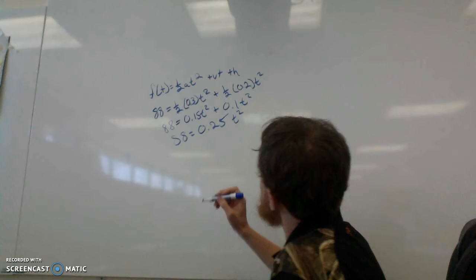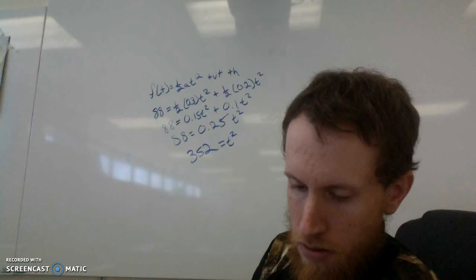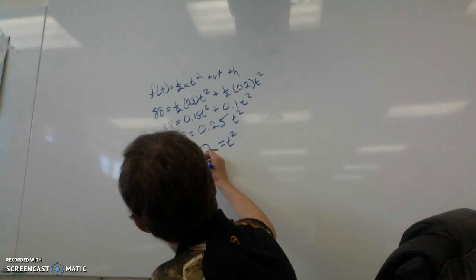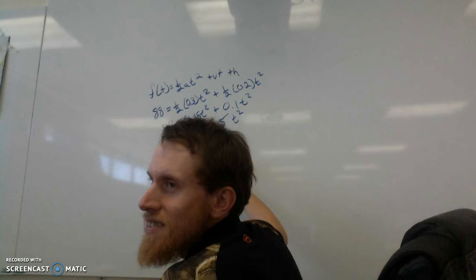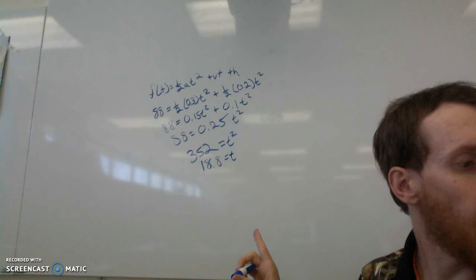Which gives us 352 equals t squared. And if we take the square root, it's 18.76. Yeah, I got 18.76. Okay, that's an impressive guess.